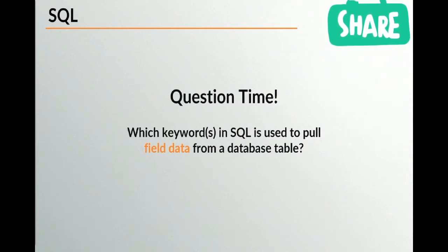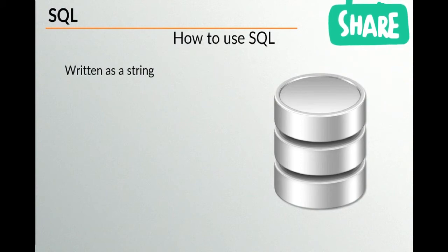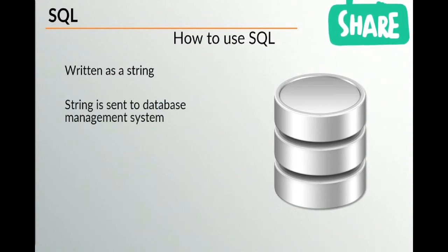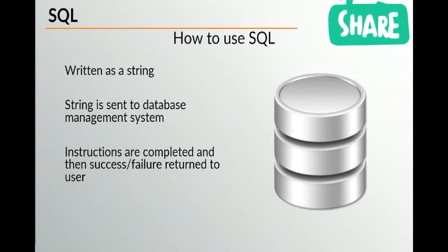How do we actually use SQL? When writing an SQL string, you write it down and store it in your back-end language — in our case, inside a PHP string. Once the SQL string is prepared, we send it to the database management system using our back-end coding language. The database reads the SQL string, completes the instructions, and then tells us whether it was successfully able to complete them. If a failure occurs, generally you've written something wrong with your SQL string and need to correct it.